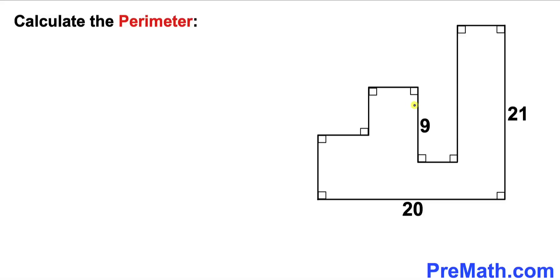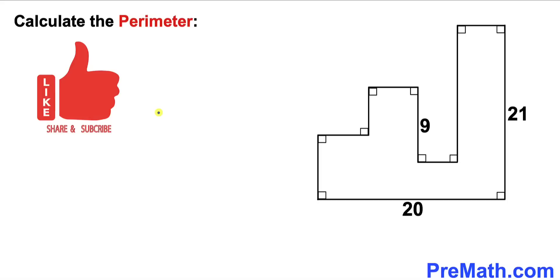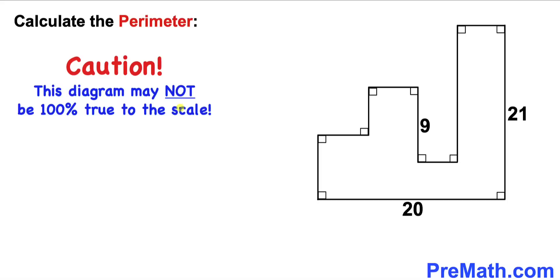Welcome to Pre-Math. In this video we have a 10-sided shape, where the horizontal length of one of its sides is 20 units, and its vertical side lengths are 21 and 9 units. Keep in mind that all corner angles are 90 degrees. We are going to calculate the perimeter of this shape. Note that this figure may not be 100% true to scale.